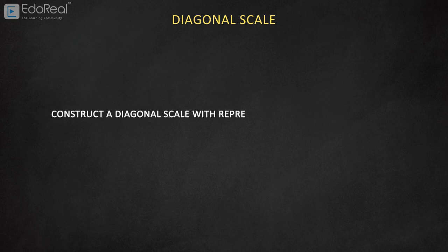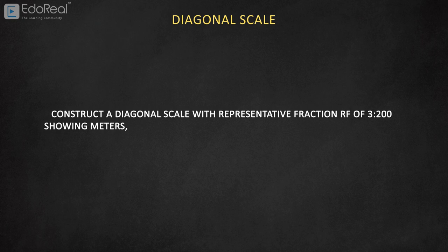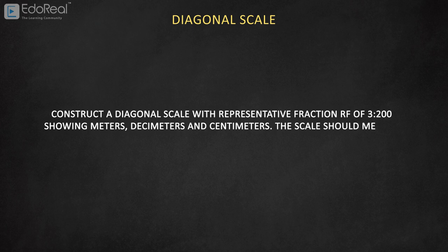Construct a diagonal scale with representative fraction RF of 3 to 200, showing meters, decimeters and centimeters. The scale should measure up to six meters. Show a distance of 4.56 meters.